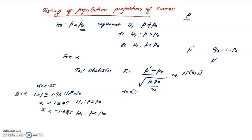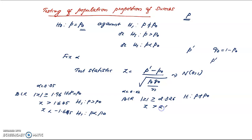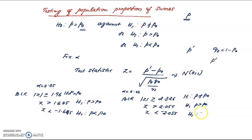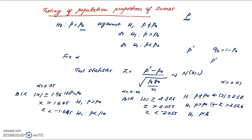At alpha 0.02: two-tailed critical region is modulus of Z ≥ 2.326; right-tailed Z > 2.055; left-tailed Z < -2.055. At alpha 0.01: two-tailed critical region is modulus of Z ≥ 2.58; right-tailed Z > 2.326; left-tailed Z < -2.326.